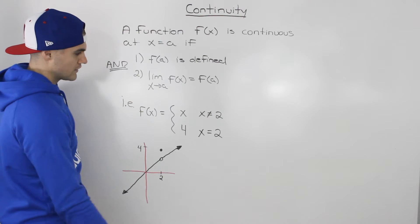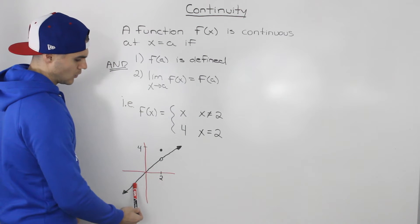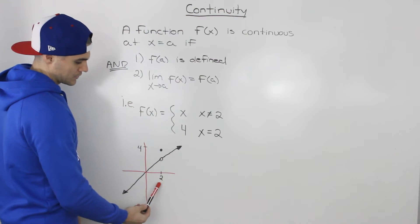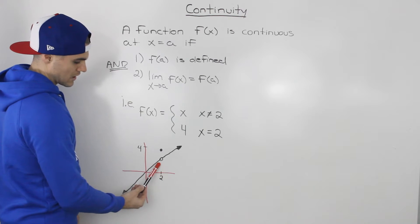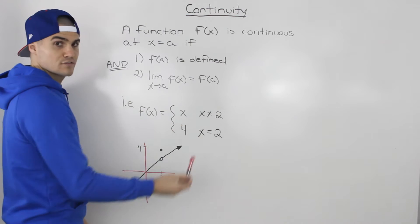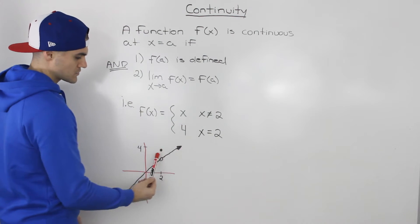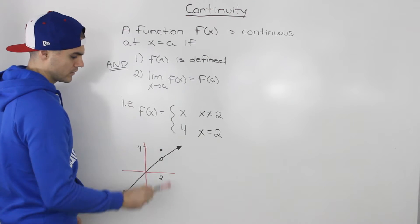So for all the x values that don't equal two, it's going to be defined by this line y is equal to x. And notice how at an x value of two, there is a hole there because the y equals x piece of this function is not defined at an x value of two. At an x value of two, the y value is four. So we have this point there.